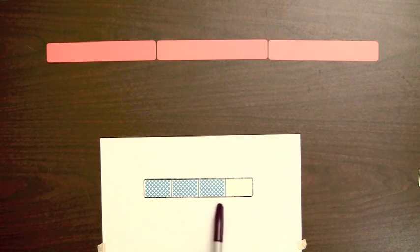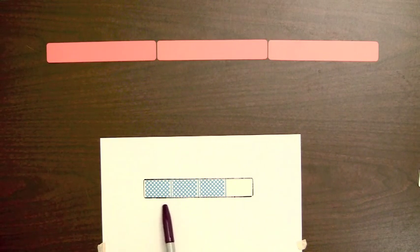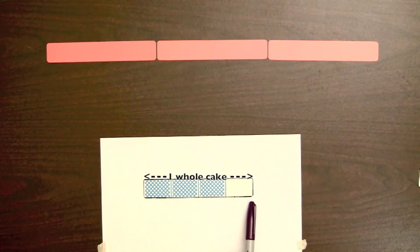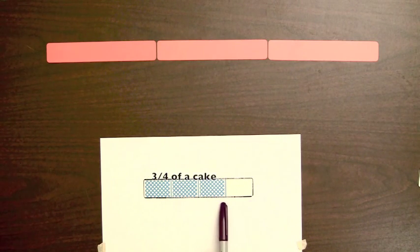Suppose a person has three-fourths of a cake. The one whole cake can be represented by this whole bar, and the three shaded parts of the bar represents three-fourths of a cake.